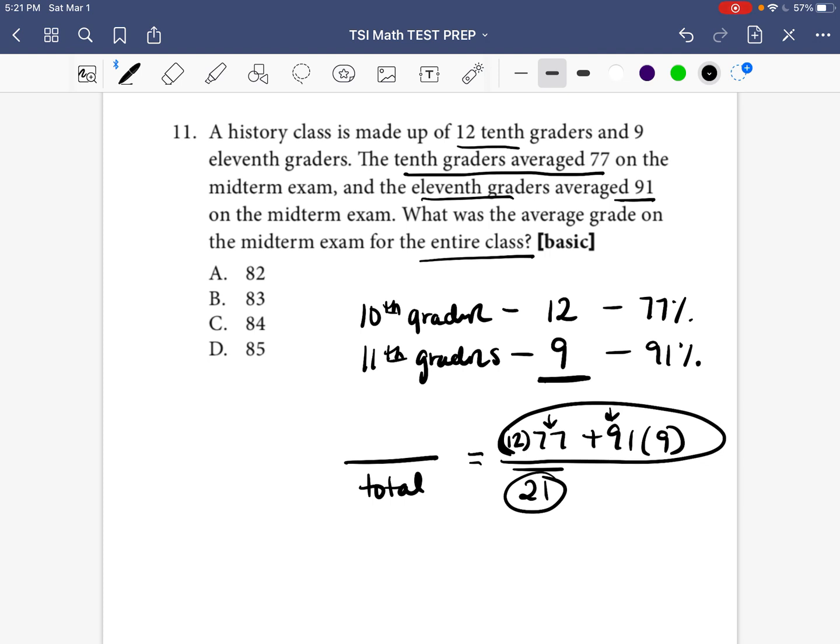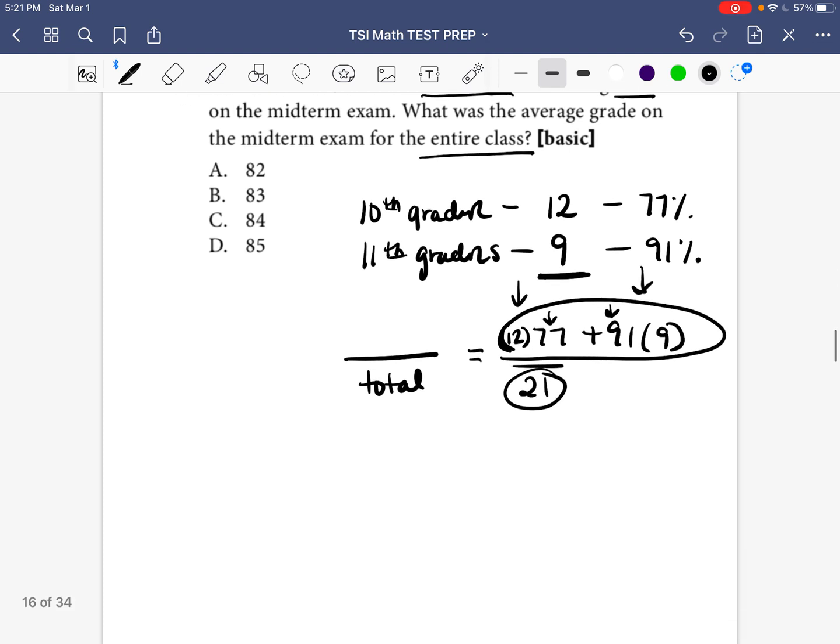And now when we add these all together, 21 different scores will be represented. 12 77s and 9 91%. So I'm going to bring this down here just so we can see it better. 12 times 77 and 91 times 9, and it's all going to be over 21.